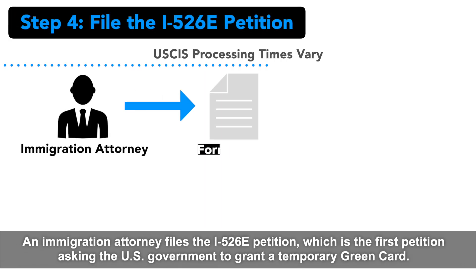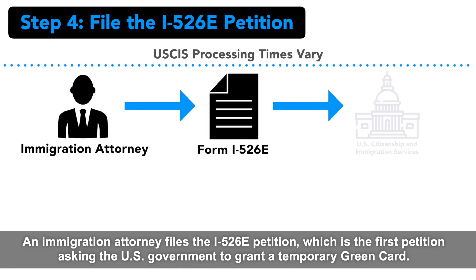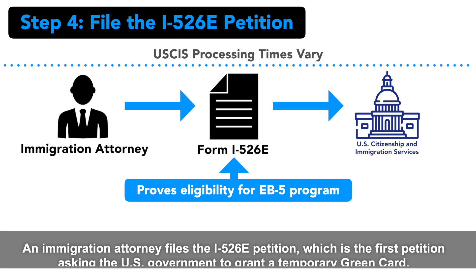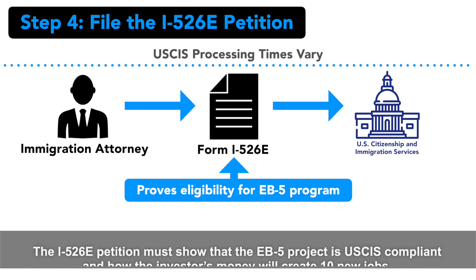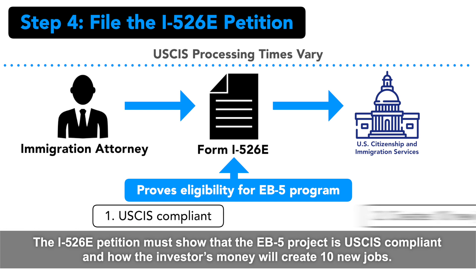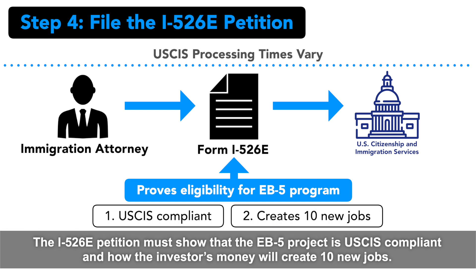An immigration attorney files the I-526E petition, which is the first petition asking the U.S. government to grant a temporary green card. The I-526E petition must show that the EB-5 project is USCIS compliant and how the investor's money will create 10 new jobs.